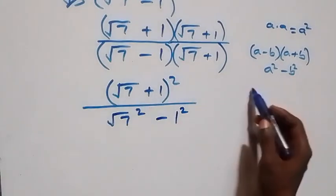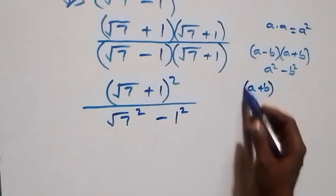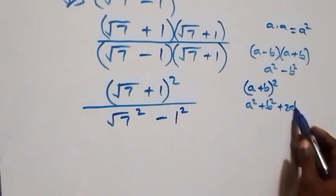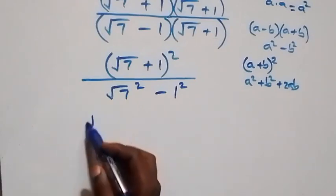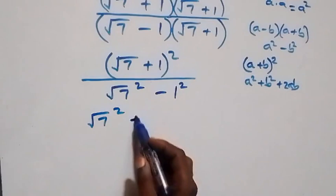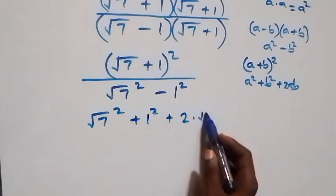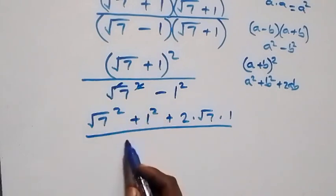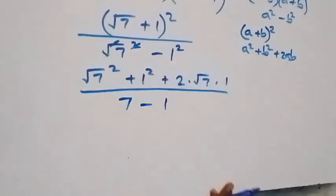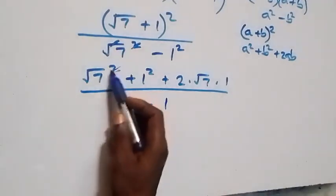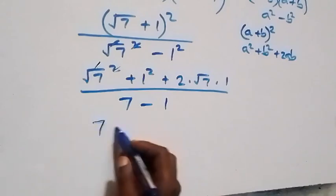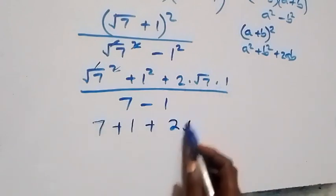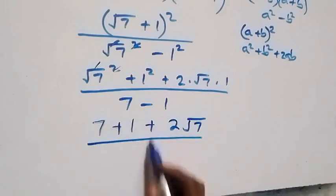We expand the numerator using (a + b)² = a² + b² + 2ab. So (√7 + 1)² = √7 squared plus 1 squared plus 2 × √7 × 1. Over the denominator: square cancels square root giving seven, minus 1 squared which is 1, so the denominator is 7 - 1 = 6. This gives us 7 + 1 + 2√7, all over 6.